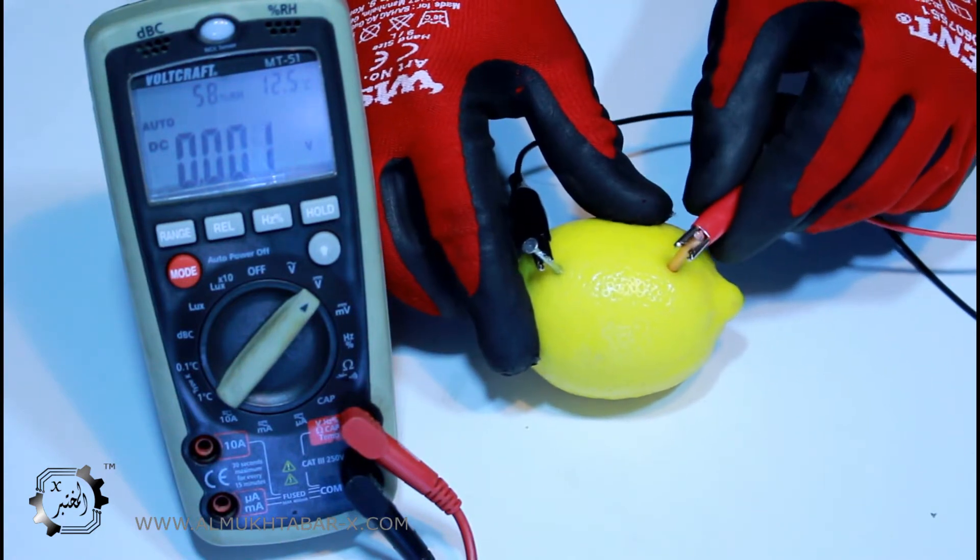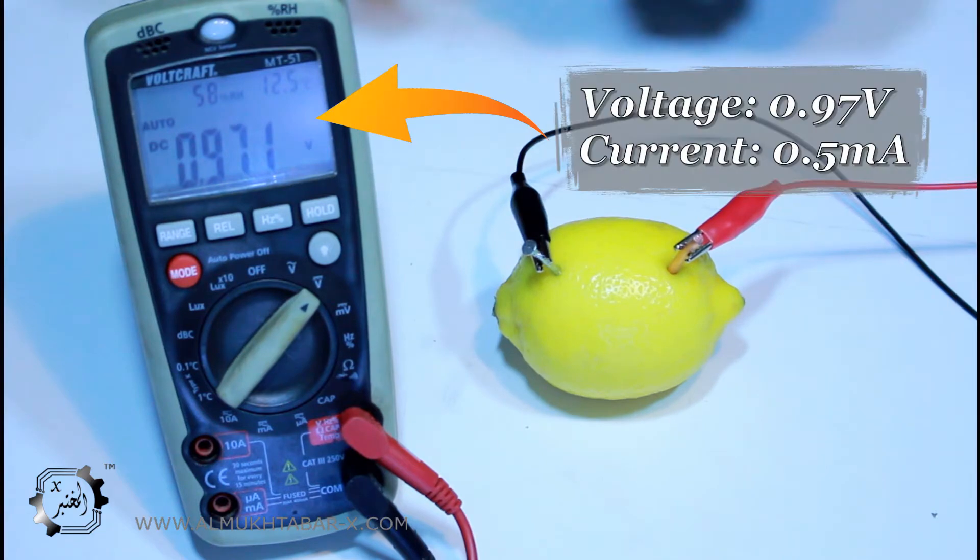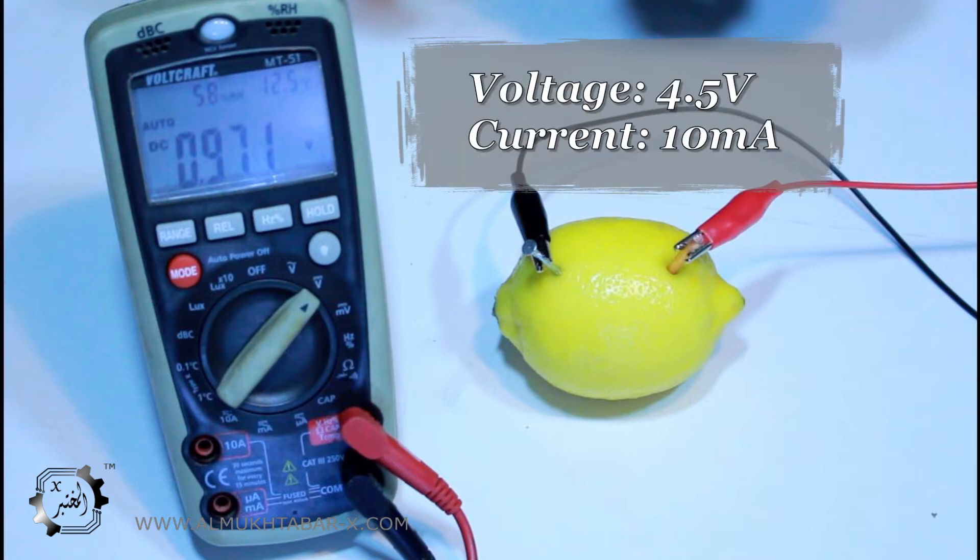As you can see in the multimeter, the voltage is almost 1 volt. The current however is 0.5 milliamp. That's not enough for us to be able to charge a mobile. We need at least 4.5 volts and 10 milliamp.